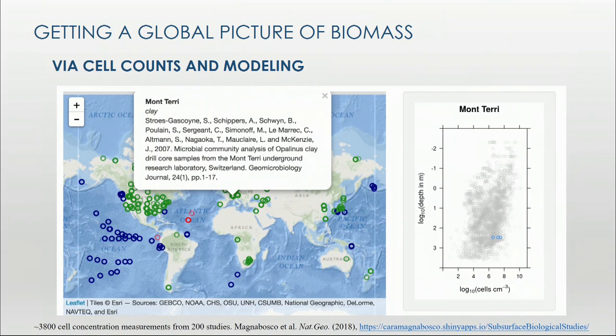We used machine learning ideas to develop models to predict how many cells live within the continental subsurface, using feature selection, cross-validation, and weighted bootstraps to build the best predictive model. What we found was that depth is a major parameter controlling how many cells are present at a given point, and crustal composition was a good proxy for the lithology trend we observe in cell densities with depth.